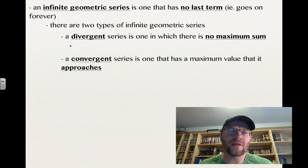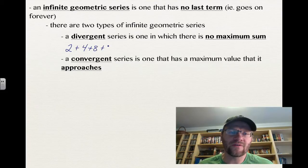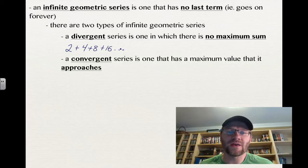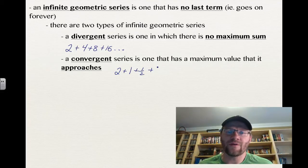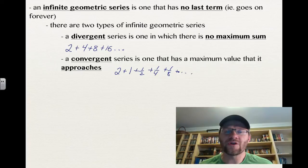A divergent series is something like 2 plus 4 plus 8 plus 16 dot dot dot. You're never actually getting to an end answer. When you add these numbers up, it'll go on forever. A convergent series would be something like 2 plus 1 plus 1 half plus 1 quarter plus 1 eighth. As you keep adding terms, those terms get so small that eventually you're going to come up with a maximum value that the sum would approach. It doesn't quite equal it, but it approaches it.